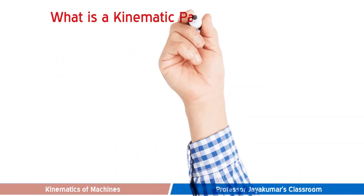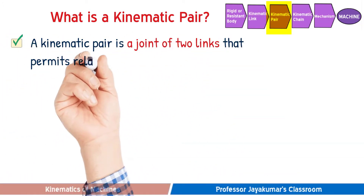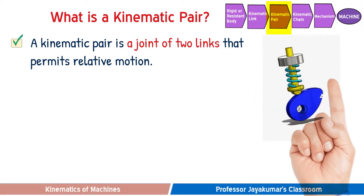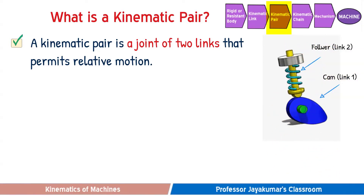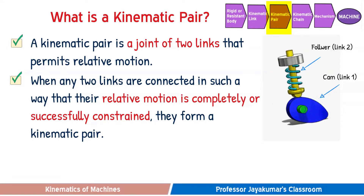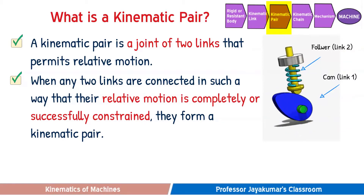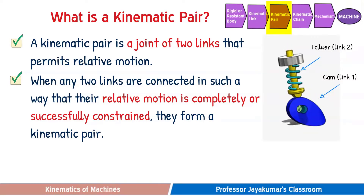Let us see the meaning of a kinematic pair. A kinematic pair is a joint of two links that permits relative motion. Consider a cam and follower mechanism where the cam is link one and the follower is link two. When these two links are connected such that their relative motion is completely or successfully constrained, then those two links form a kinematic pair. For a given rotation of the cam, the follower displacement must always be the same — that should be the nature of a kinematic pair.